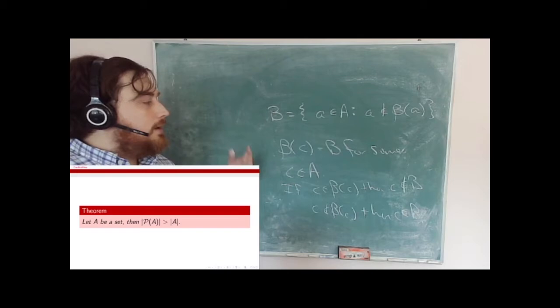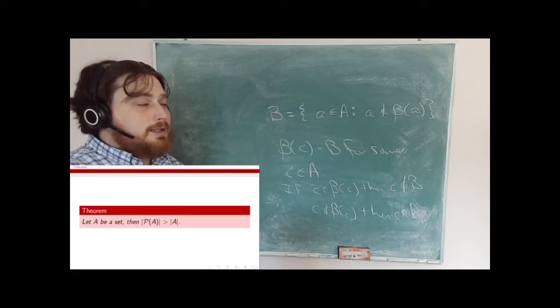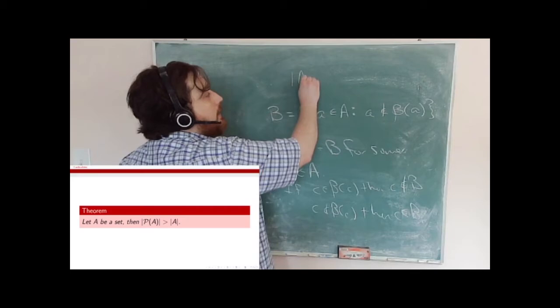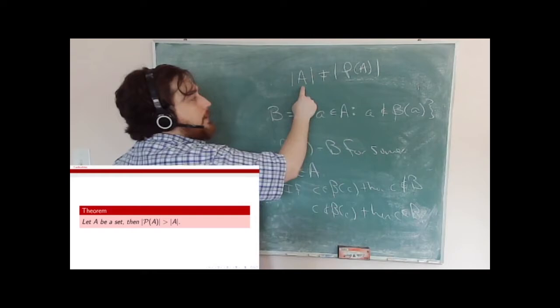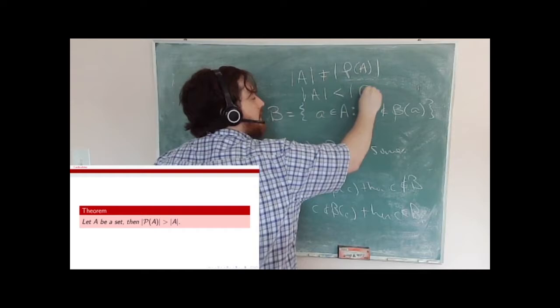Therefore beta(c) cannot equal B for any c in A, so the mapping cannot be onto. There exists no onto mapping from A to the power set of A, hence there exists no bijection. Combined with our earlier result that |A| ≤ |P(A)|, we get that the cardinality of A is strictly less than the cardinality of the power set of A.